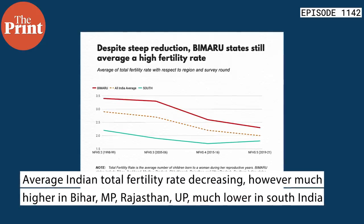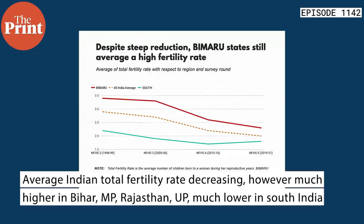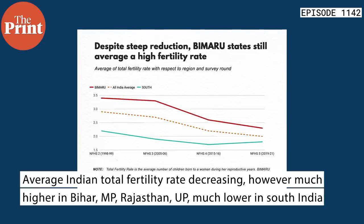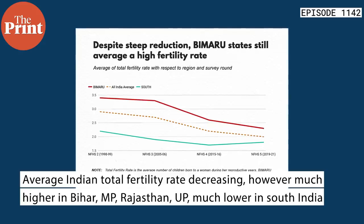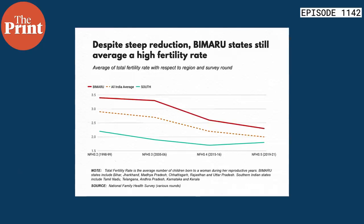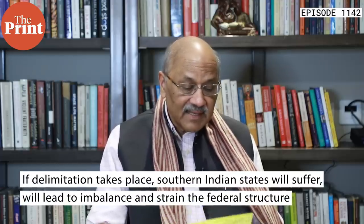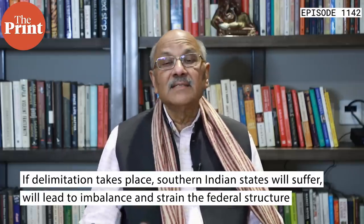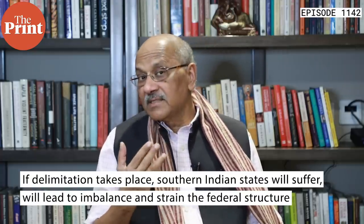The southern states' TFR line is even lower — the south is way below the national average, and below the Bimaru states by a factor of almost twice. The south has done the best job of population control, though there is a slight uptick recently — probably because it had declined too much. What this means is that if delimitation happens now, the states of the south will suffer in comparison: in a new parliament, there will be an imbalance in federal representation, because in the federal structure all states are supposed to be equal.